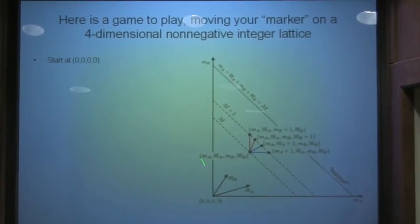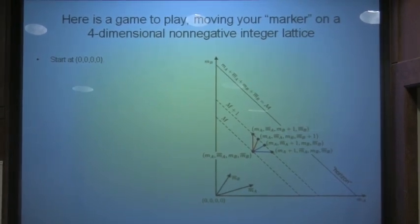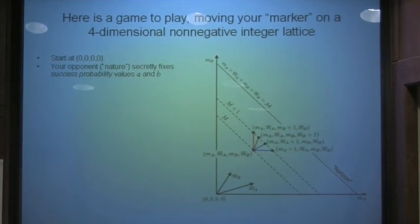The way we play the game is we start at the origin at 0, 0, 0, 0 with our marker, with our checker.